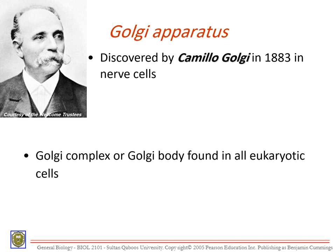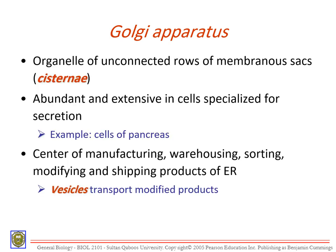The Golgi apparatus was discovered by Camillo Golgi in 1883, a very long time ago, in nerve cells. That's why it was called the Golgi body — named after the scientist who discovered it. The Golgi complex, also called the Golgi body, is found in all eukaryotic cells. It is an organelle of unconnected rows of membranous sacs called cisternae.